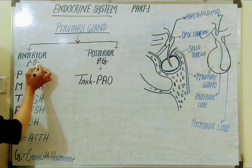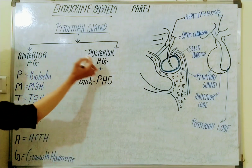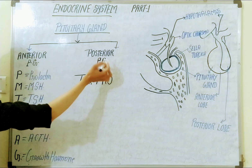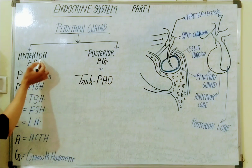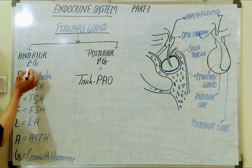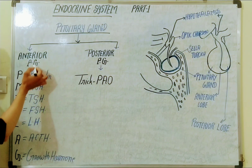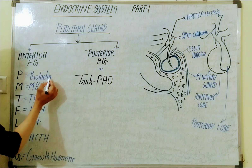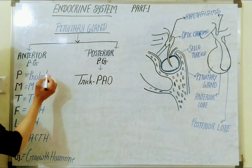The anterior pituitary gland is called adenohypophysis, and the posterior pituitary gland is called neurohypophysis. The anterior pituitary gland secretes prolactin, which is responsible for milk production.